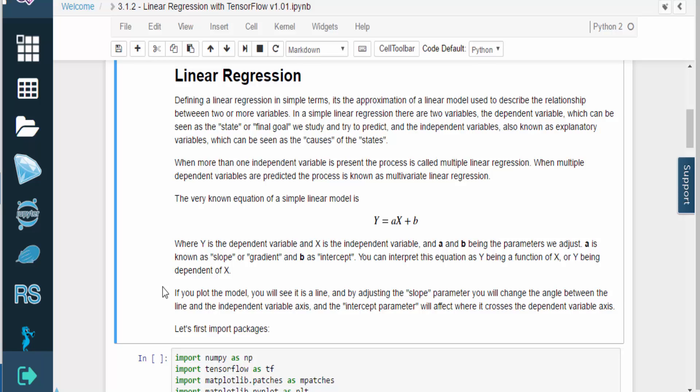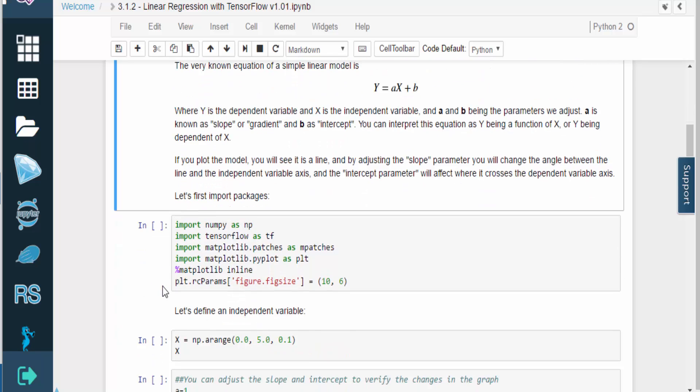If you plot the model, you'll see that the result is simply a line. Adjusting the slope parameter will change the angle that the line forms with the independent variable's axis. The intercept parameter changes the location where the line crosses the dependent variable's axis.